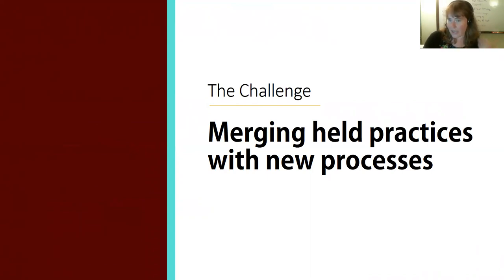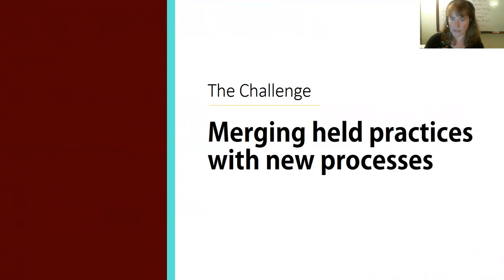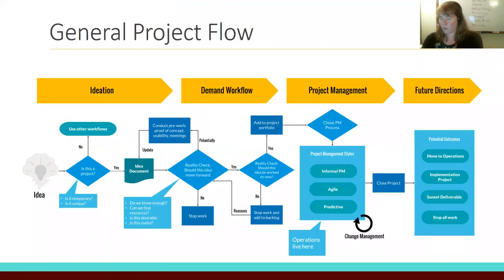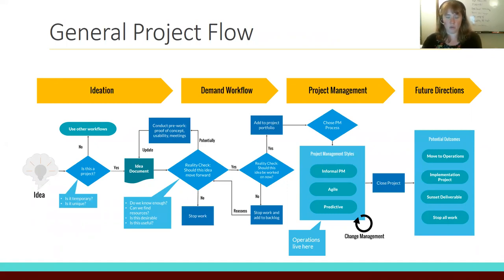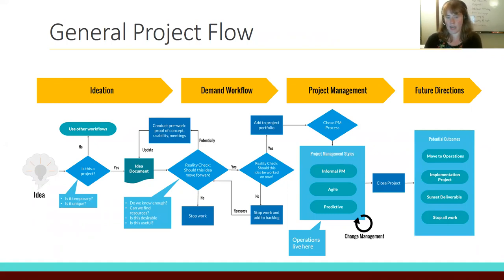I'm going to do a big overview of what we're working on generally with library projects, and how digital exhibits and Spotlight fit into that. Our general project flow has four main stages: ideation, demand, project management, and future direction. We start with an idea and ask: is this a project? Is it temporary? Is it unique? If yes, it moves into an idea document.